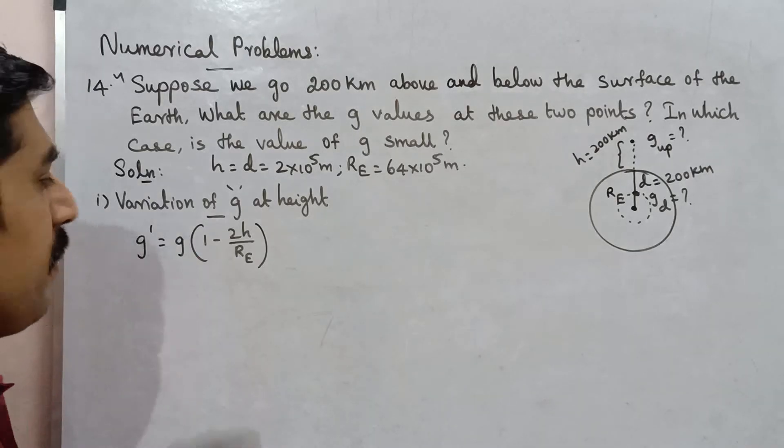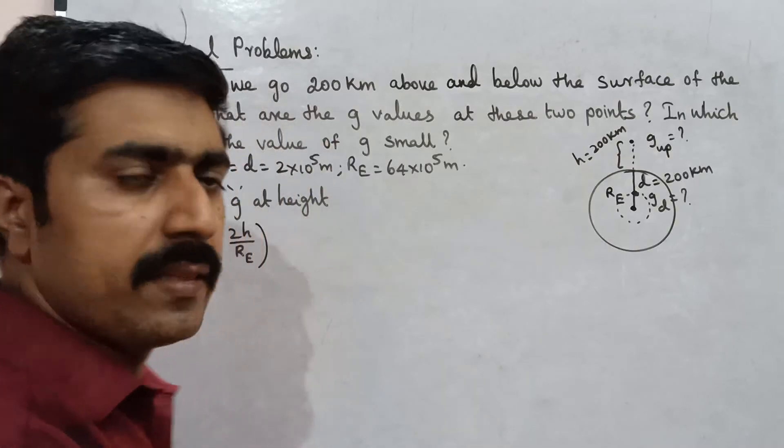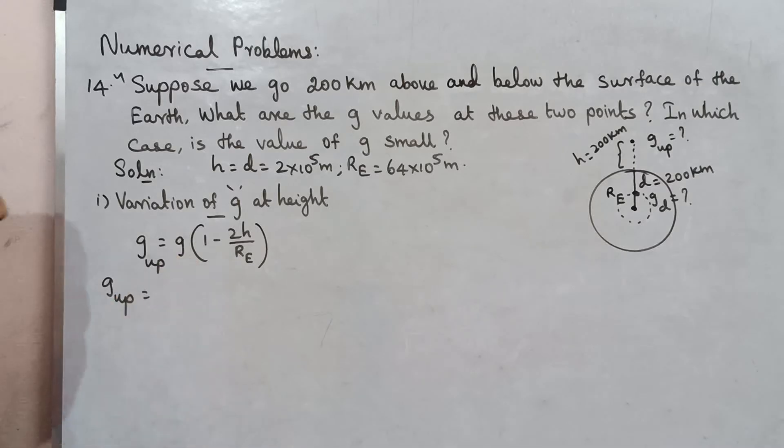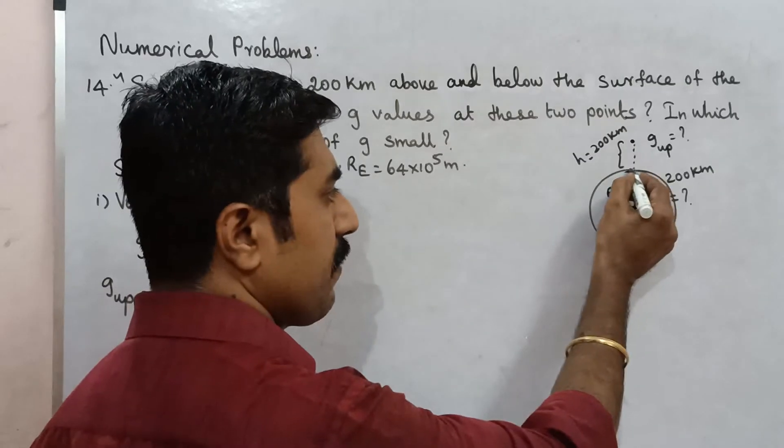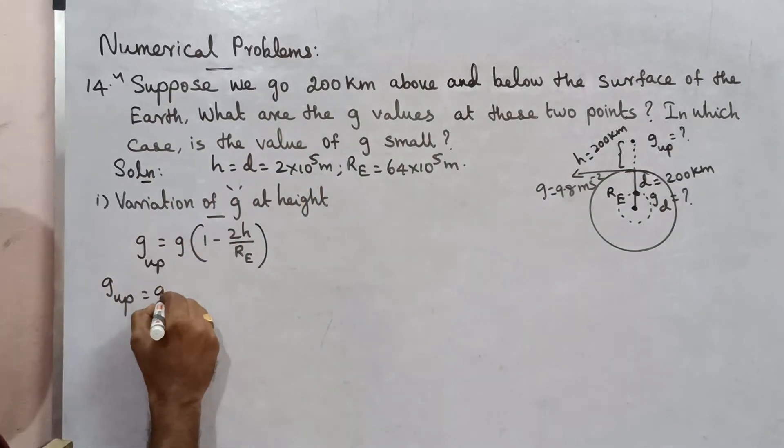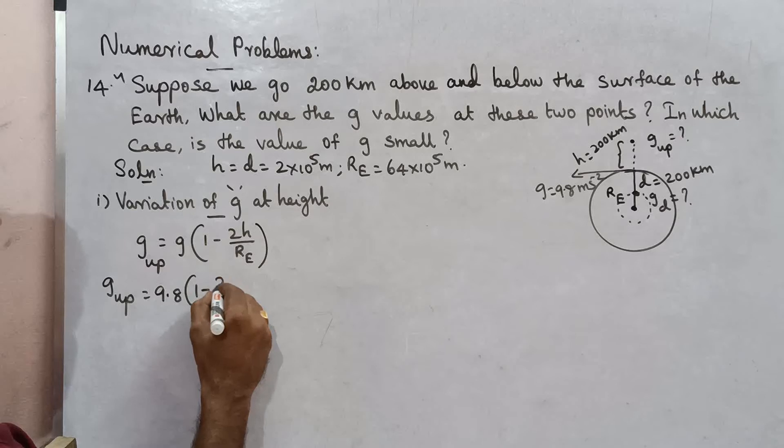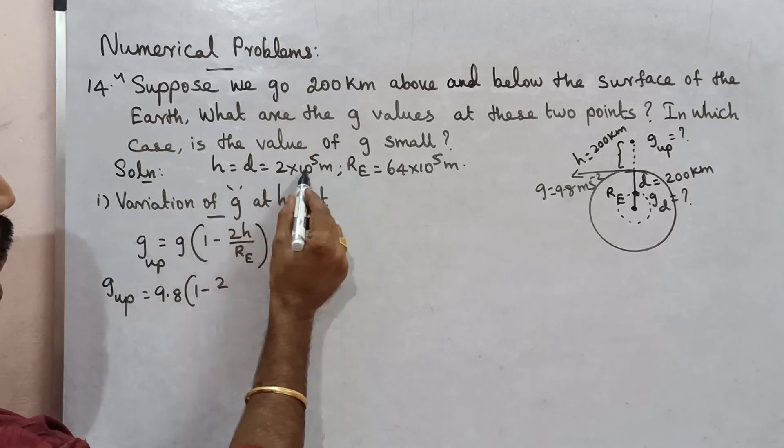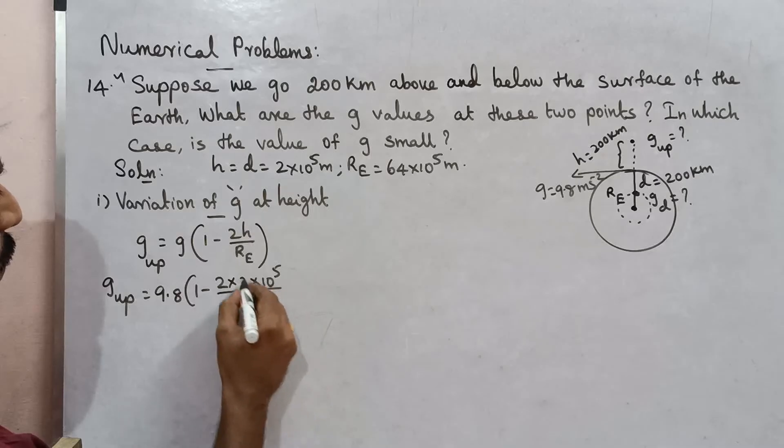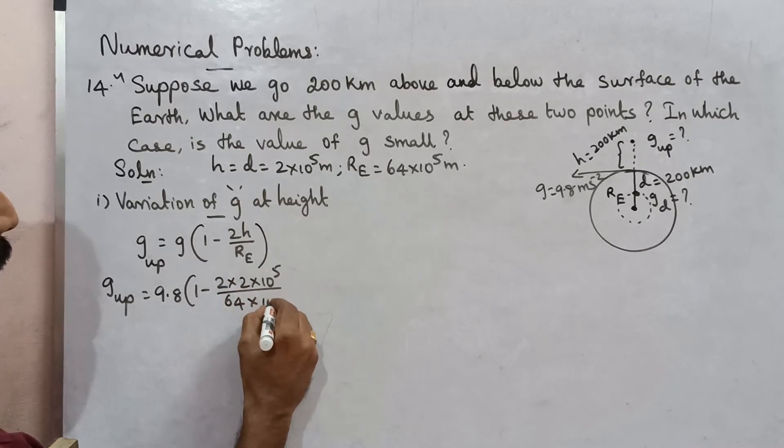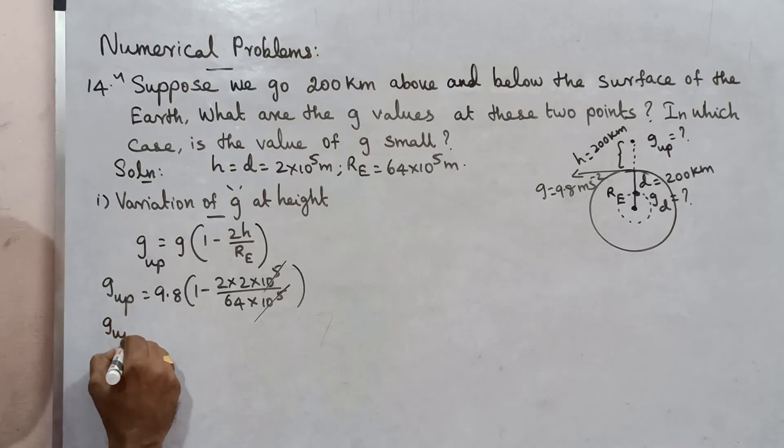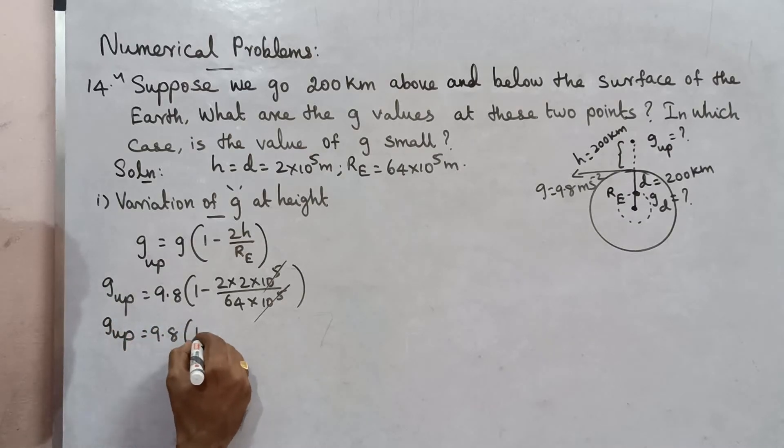So formula, g' up is equal to g, acceleration due to gravity on the surface. g is 9.8 m/s^2. So 9.8 here, 1 minus 2h, h is 2 times 10^5, divided by Re, 64 into 10^5. 10^5 cancel.